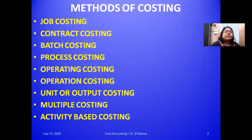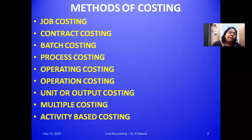The second method is contract costing. It is applied in concerns involved in construction work, like laying of roads, bridges, and buildings, etc. For each of the contracts, a separate account is opened and the total cost incurred is identified with it. The contracts may take a long time for completion. It is also known as terminal costing.